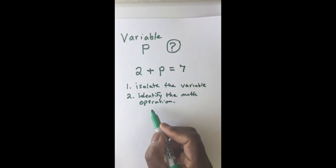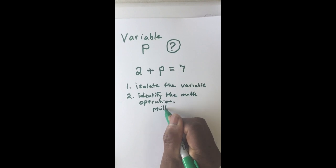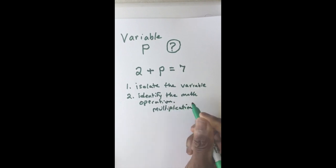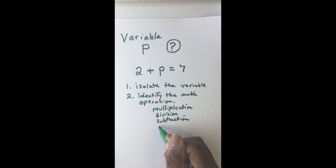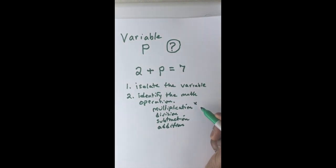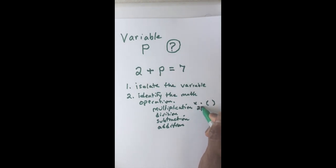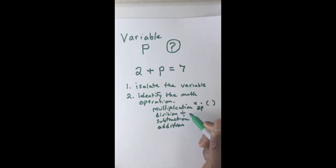There are four math operations: multiplication, division, subtraction, and addition. Multiplication we sometimes see with an x, or sometimes as a dot, or sometimes as parentheses, or sometimes with the number next to the variable — those all mean multiplication. Division we sometimes see like this, or with a slash, or with a bar that looks like a fraction. That's all division.